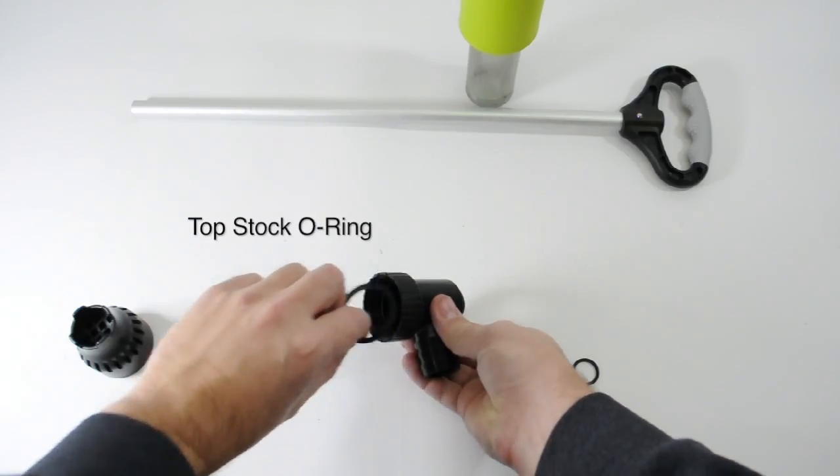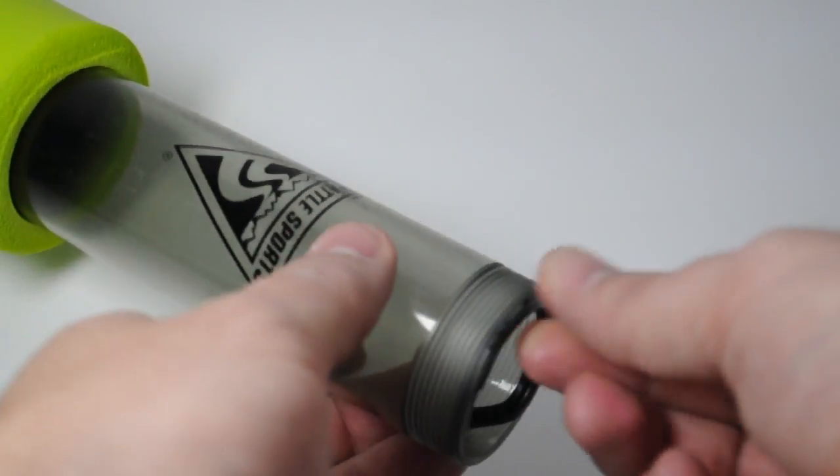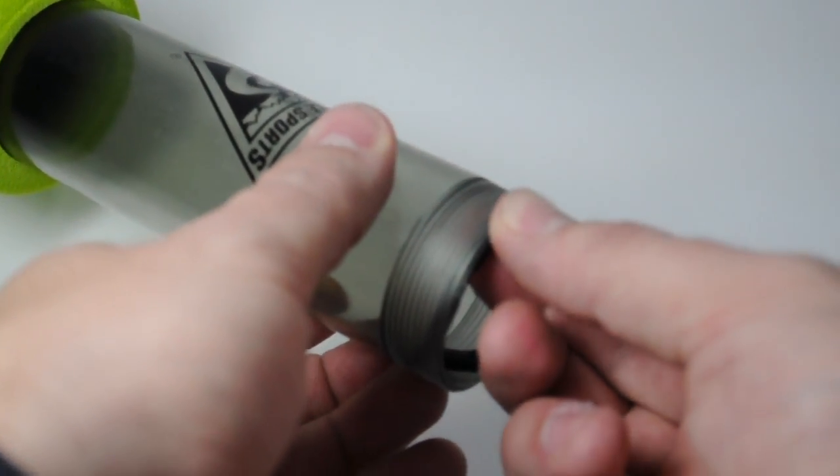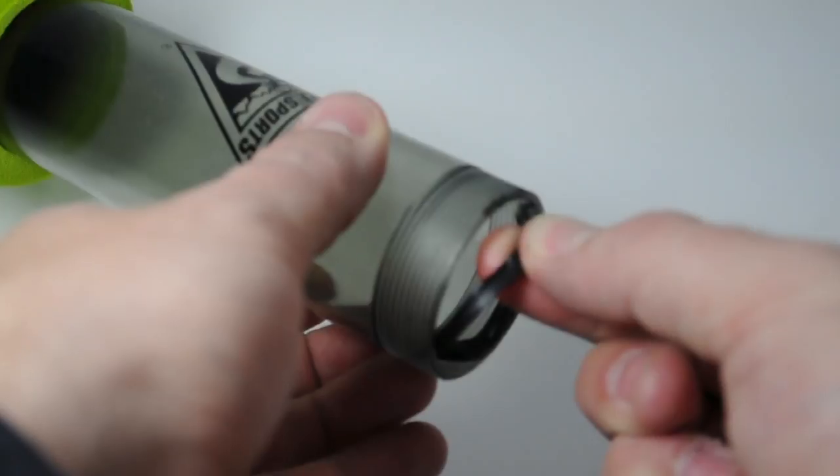There is an o-ring where the elbow meets the chamber. If this is your first time disassembling the pump, the o-ring may be attached to the top of the threading on the chamber.